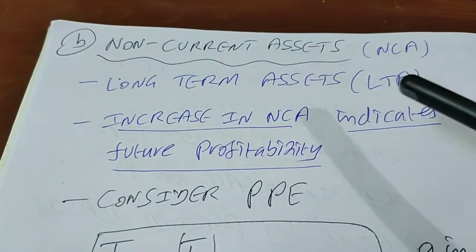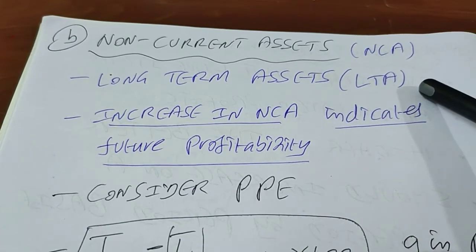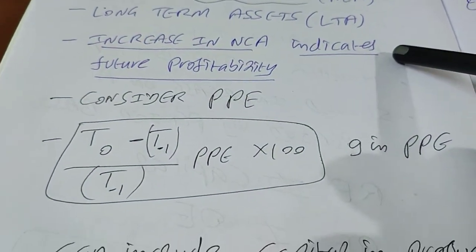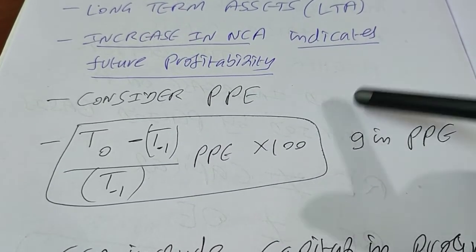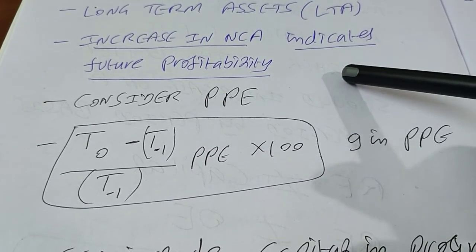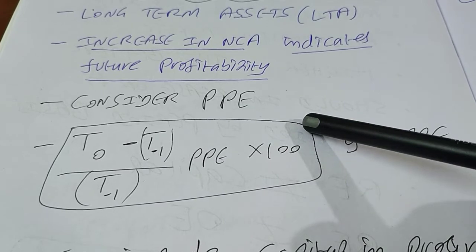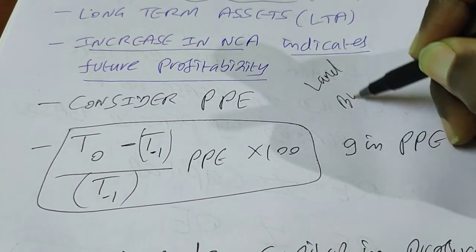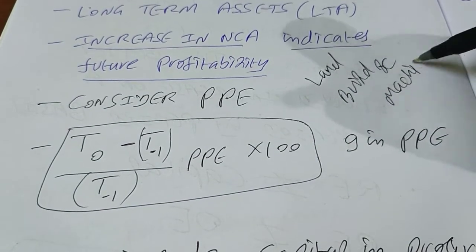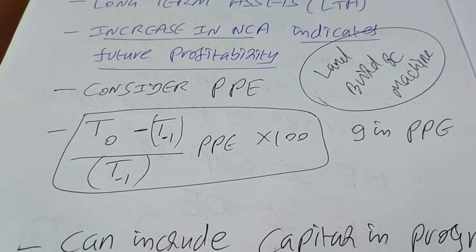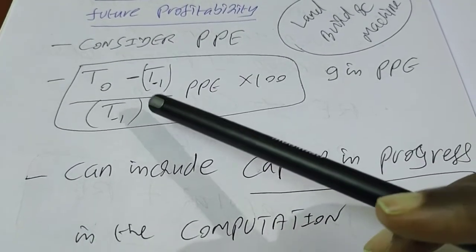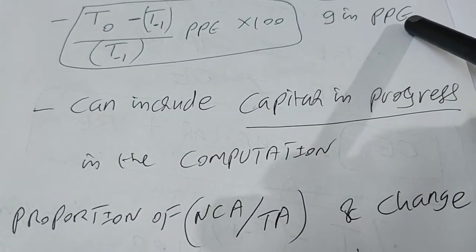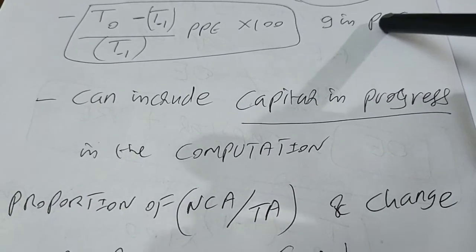The second number to look at in the balance sheet is non-current assets — basically long-term assets. An increase in non-current assets indicates the future profitability of the firm. Particularly look for tangible non-current assets, known as PPE — Property, Plant and Equipment — which includes land, building, and machinery. The growth rate in PPE is: (PPE at t0 minus PPE at t-1) divided by PPE at t-1, multiplied by 100. Higher the growth rate, better the performance.